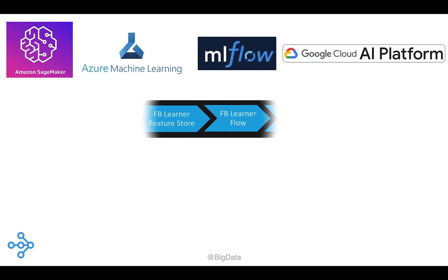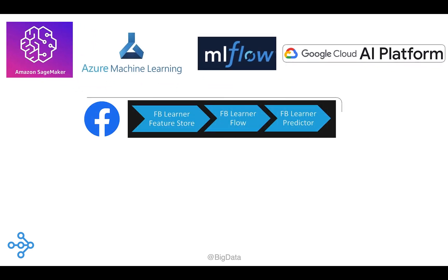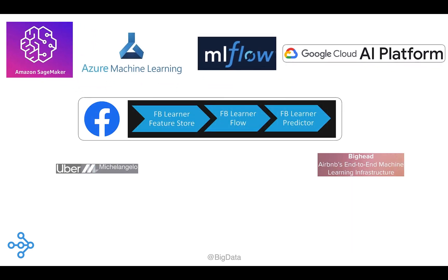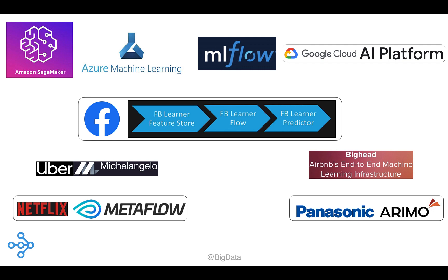Some companies are choosing to build their own machine learning platforms. Several companies, mainly in the technology sector, have shared detailed descriptions of their internal machine learning platforms. This includes Uber with Michelangelo, Facebook with FB Learner, and Airbnb with Big Head.